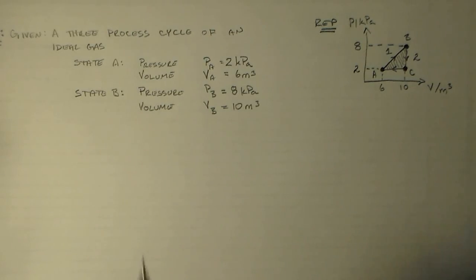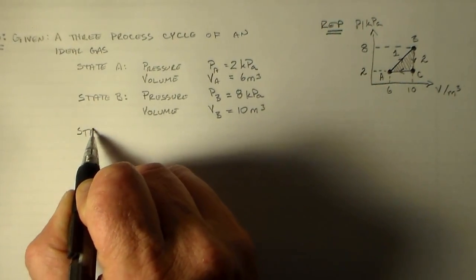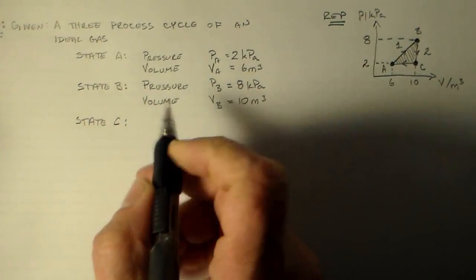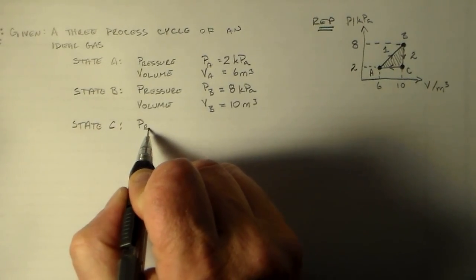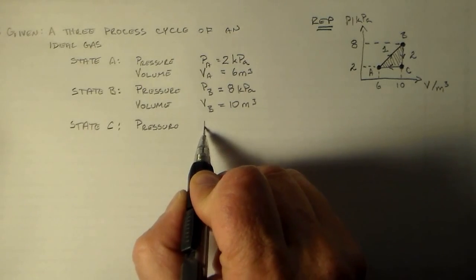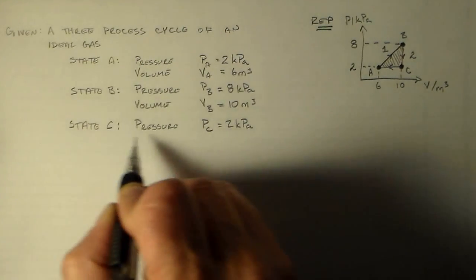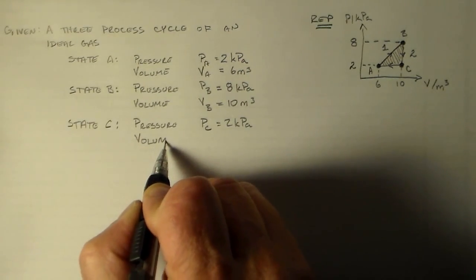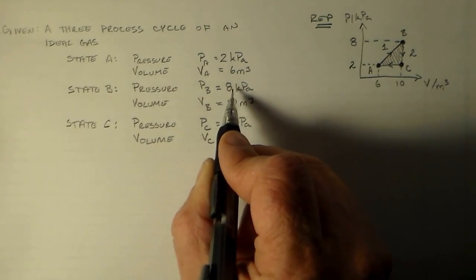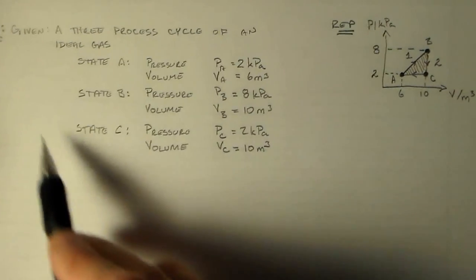Additionally, we have point C or state C. This has a pressure which is back down to 2 kilopascals. So PC is equal to 2 kilopascals. And the volume of C is equal to 10 meters cubed. So now we have all of our states.